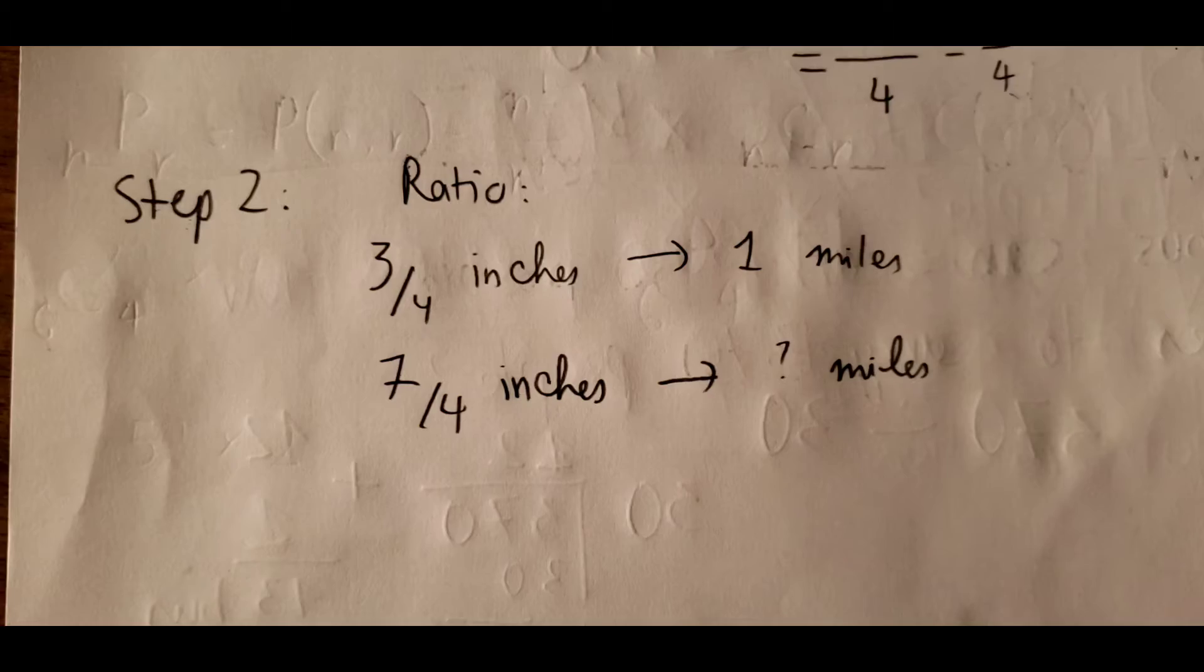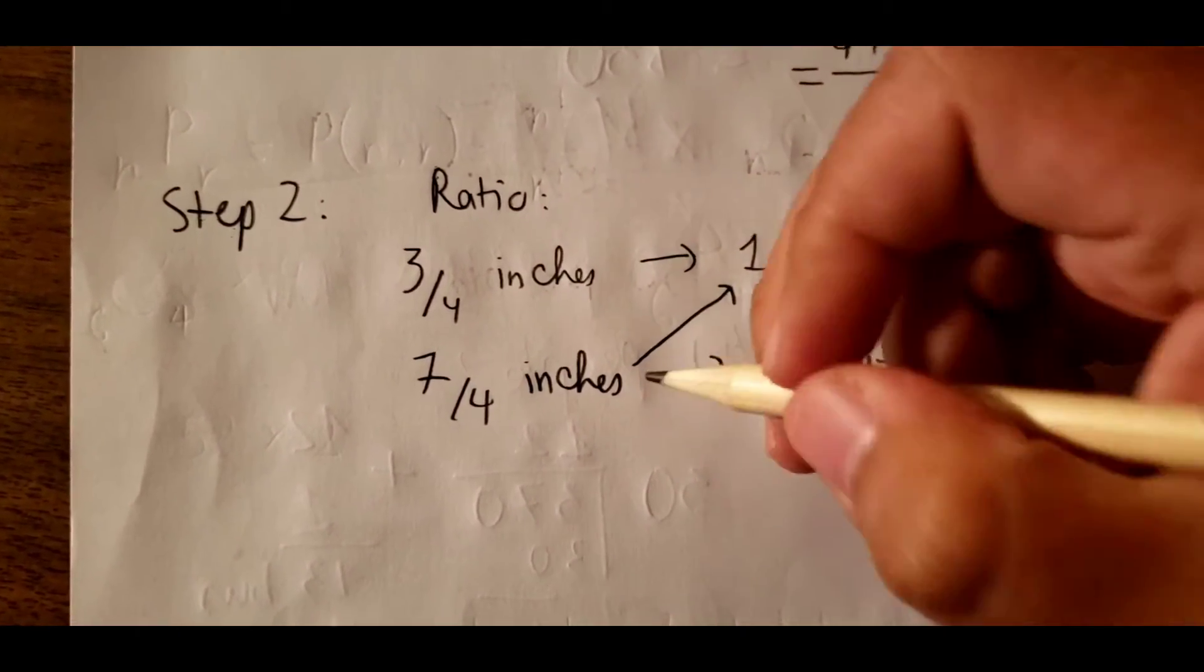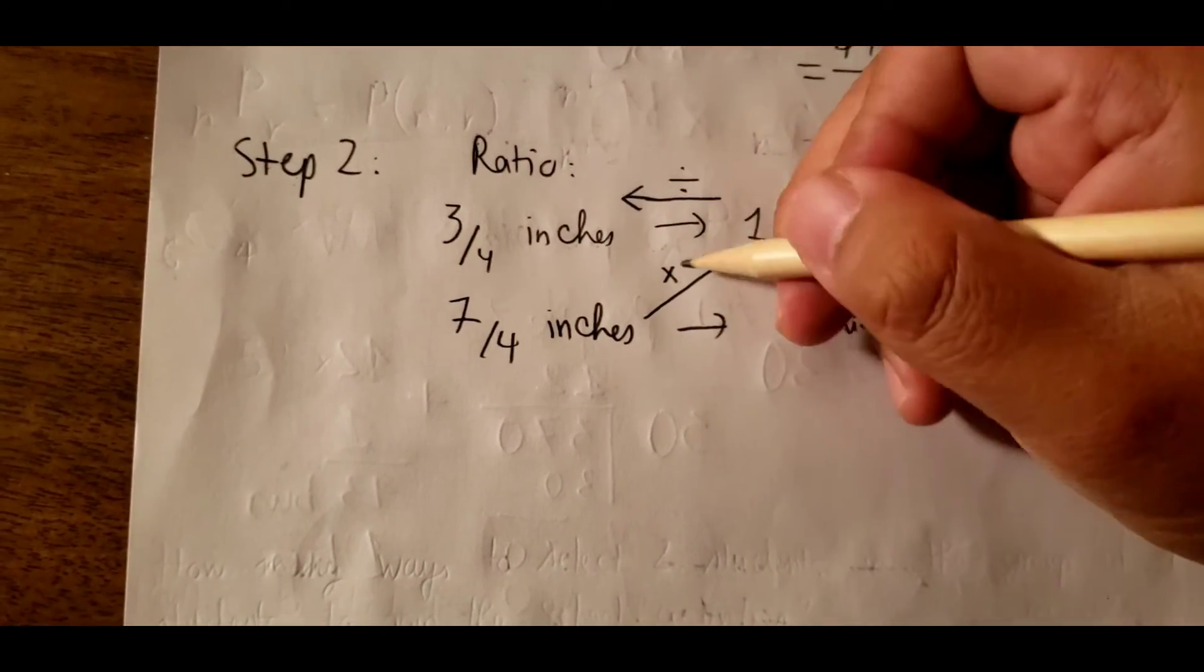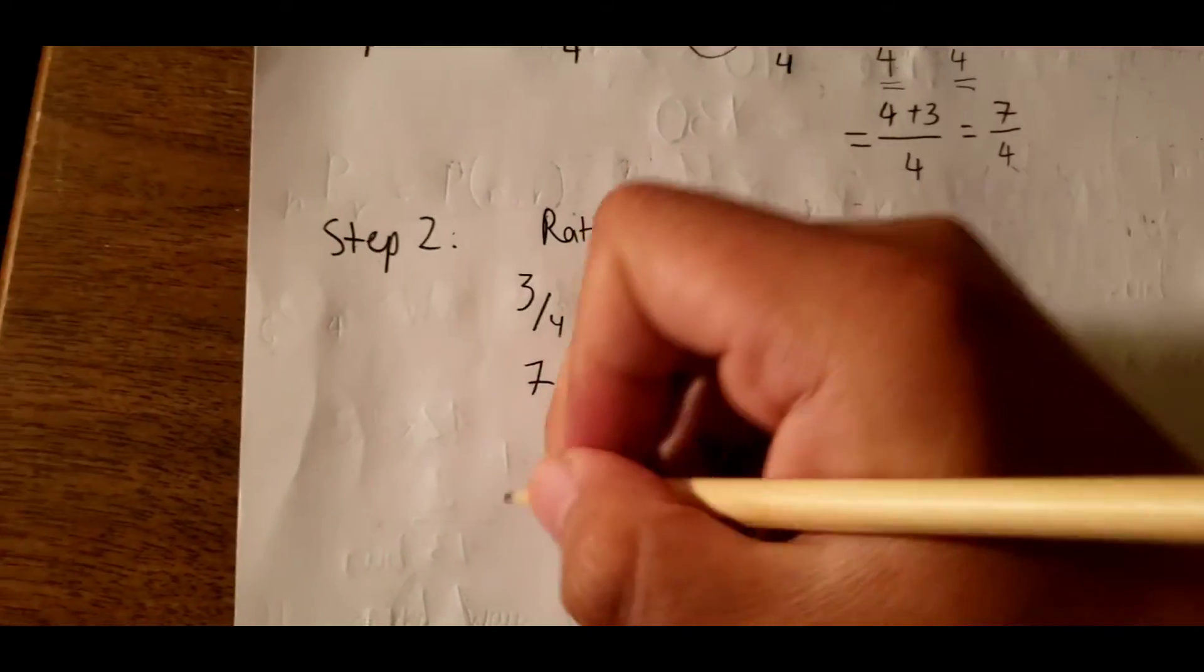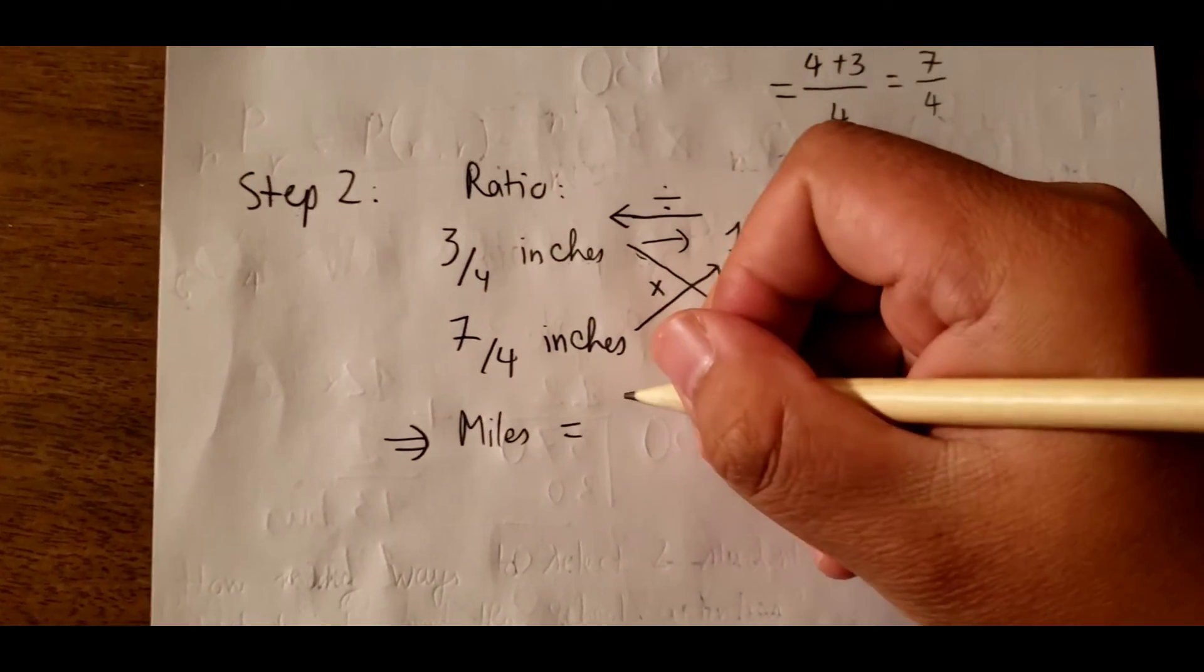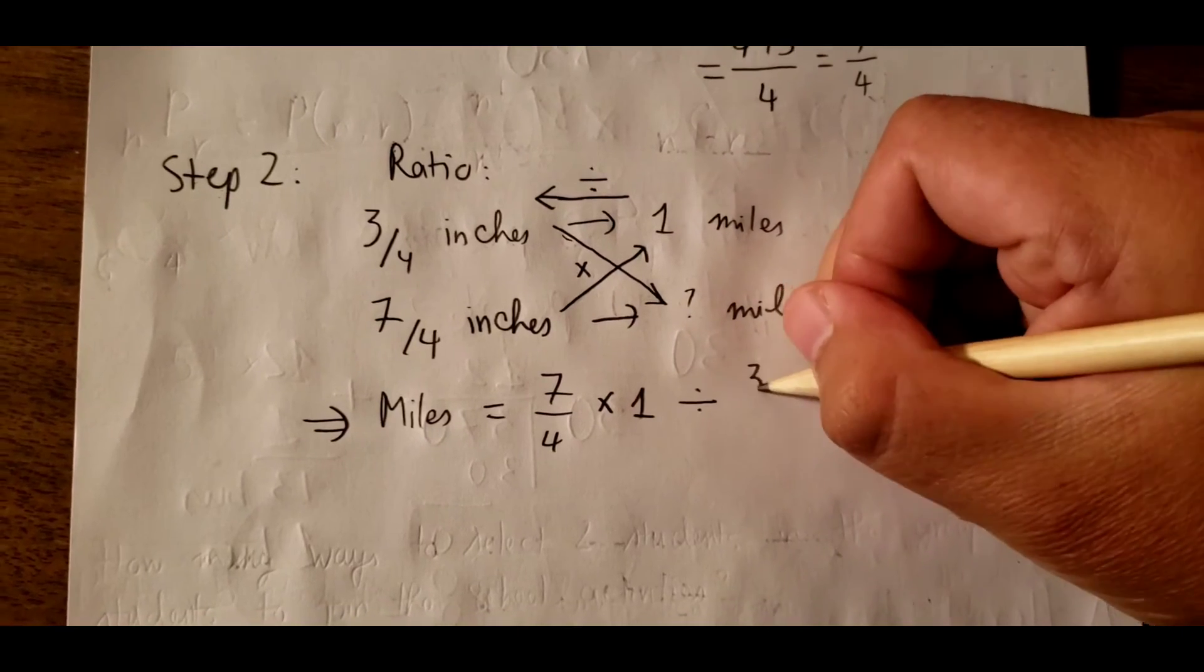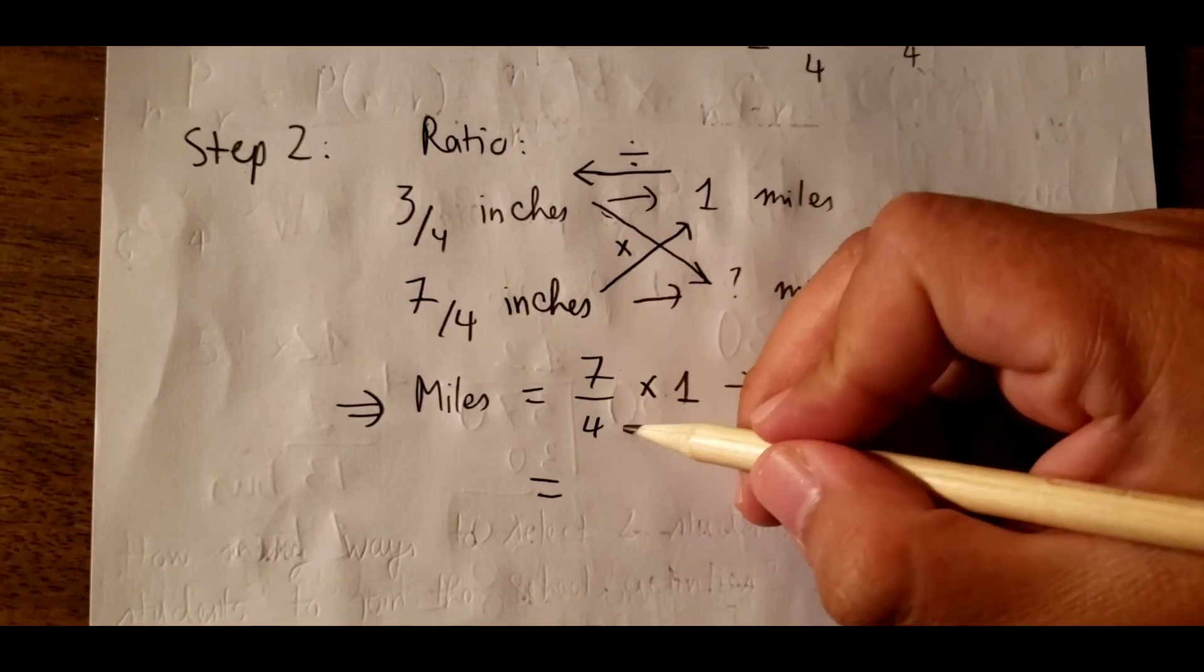So in this question like this, we just put it in a simple way. When we cross, the ratio does a multiplication, and in the same area we just divide, so that we can find the answer. So the miles for this question should be 7 over 4 multiply with 1, divide by 3 over 4.